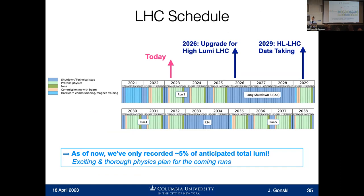Our next long shutdown is coming up in 2026, when we will install the upgrades for the high luminosity LHC. Then it will start running in 2029. The rest of the lifetime of the LHC — up until around 2038 in this timeline — we will be running at high luminosity. There are two more full runs left in this machine, nearly 15 years of running. As of now, we've only collected about 5% of the data we will get overall from the LHC, which is an incredibly exciting perspective. We've achieved so much with the years we've used this machine, and there's a huge physics potential for the data that will come in those additional runs.